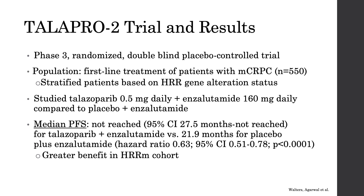The TALAPRO-2 trial examined first-line treatment of metastatic castration-resistant prostate cancer, stratifying patients by HRR gene alteration status. It compared talazoparib 0.5 mg daily with enzalutamide 160 mg daily versus placebo with enzalutamide. Median progression-free survival was not reached for the talazoparib arm versus 21.9 months for placebo plus enzalutamide at the time of evaluation, with greater benefit seen in the HRR-mutated cohort.